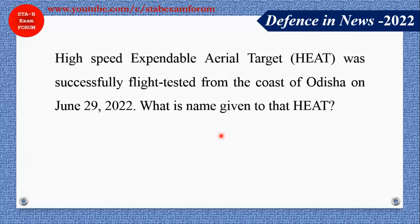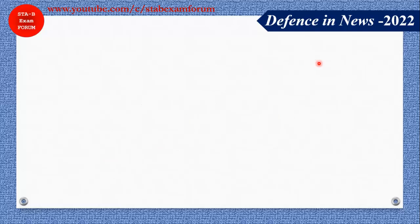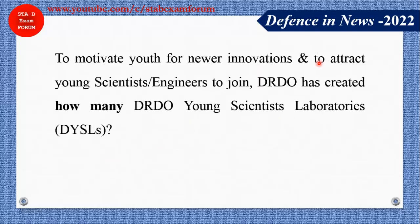HEAT — High Speed Expendable Aerial Target — was successfully test-fired. What is the common name for this target? It is not a missile but a UAV. The correct answer is Abhyas UAV, which is also known as High Speed Expendable Aerial Target.